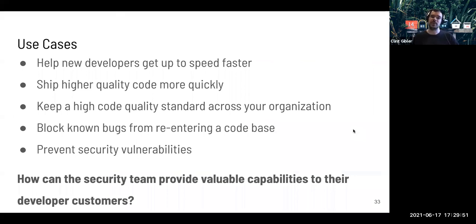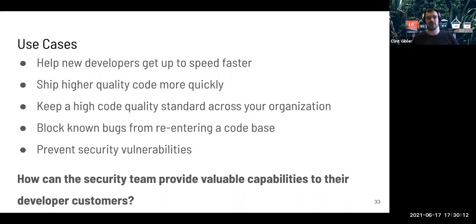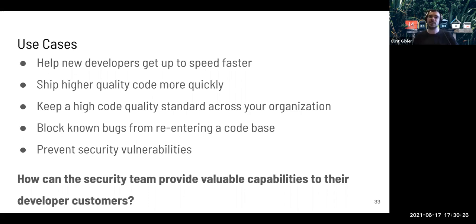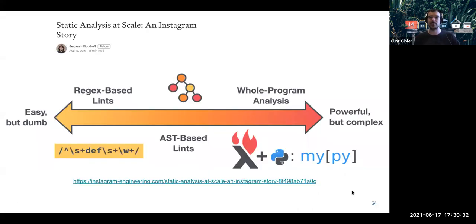Some use cases: help new developers get up to speed faster — you can have checks that say 'you're writing code like this, but you should write it like this,' helping engineering teams ship higher quality code. Enforcing code quality standards from a security point of view. If you have bug bounty or pen test bugs, preventing similar bugs from entering in the future, finding bugs across a variety of vulnerability classes. And as a security team, providing valuable capabilities to your developer customers. I see this time and time again across modern security teams.